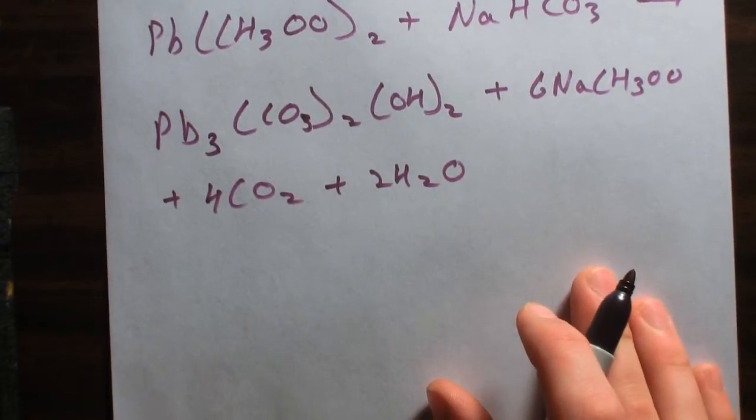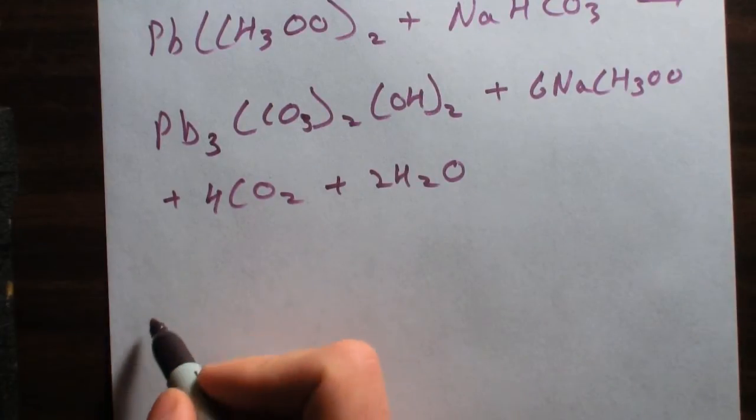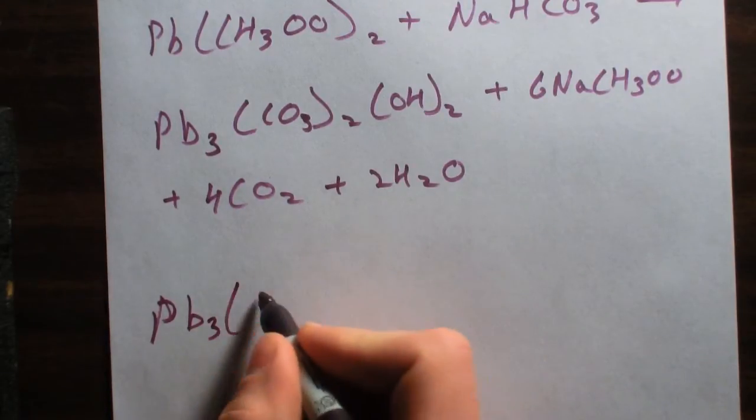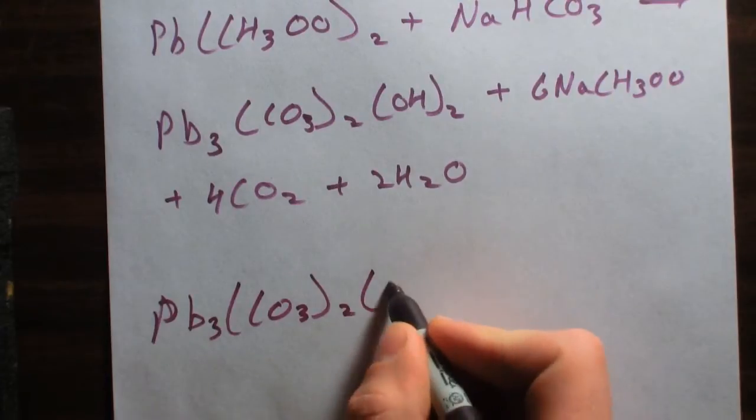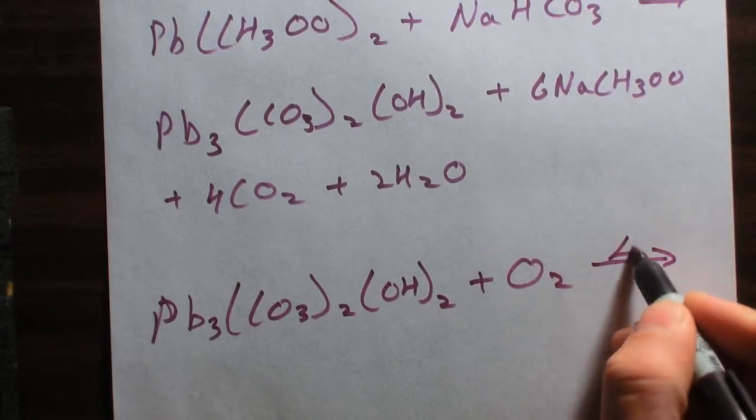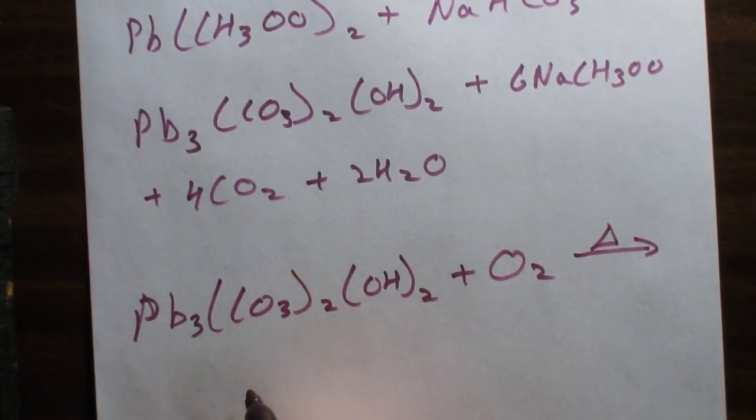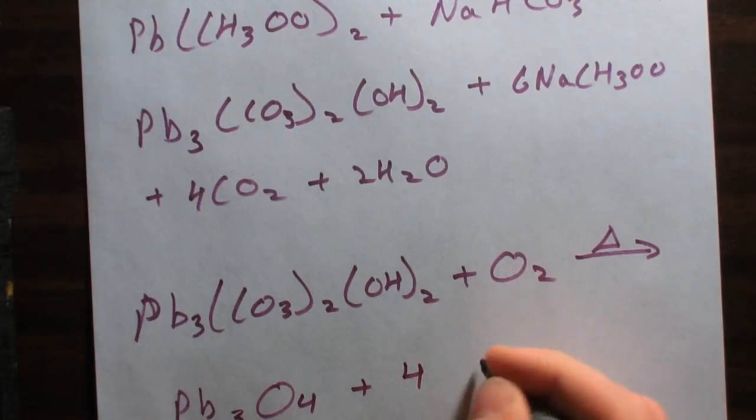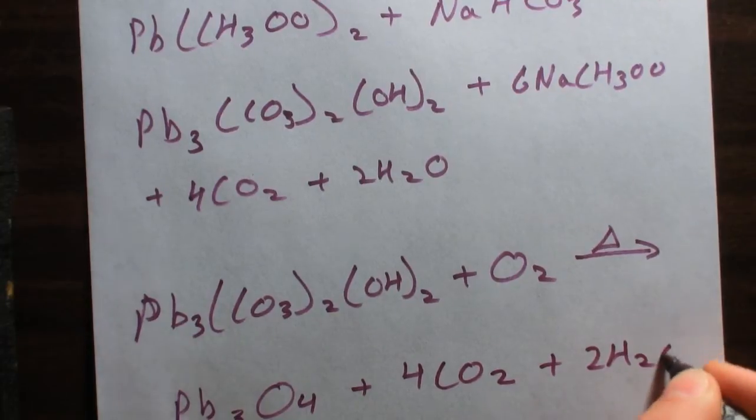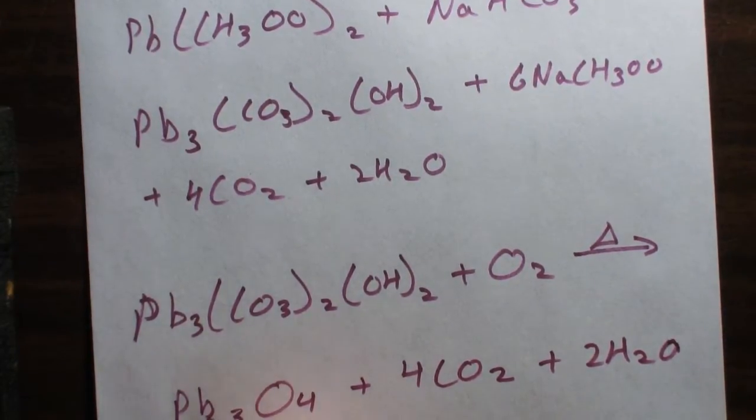So the last reaction I'm going to show today is the conversion of basic lead carbonate into lead tetraoxide. So we're going to take this plus oxygen, introduce some heat, and this is going to convert into lead tetraoxide.